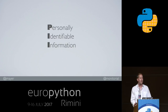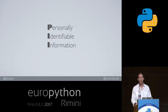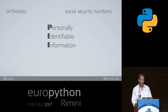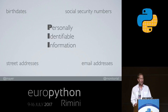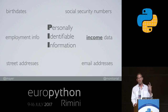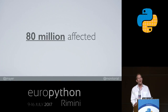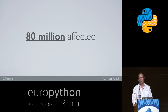What kind of information was at risk? There's what we call personally identifiable information, which can include birth dates, social security numbers, street addresses, email addresses, employment information, and income data — a lot of very sensitive information. Anthem claims that no medical data was stolen, but I don't know that anyone actually believes that. There were 80 million people affected in this one breach.